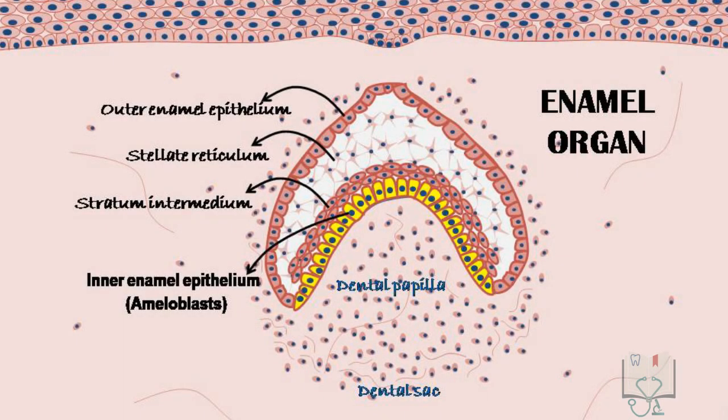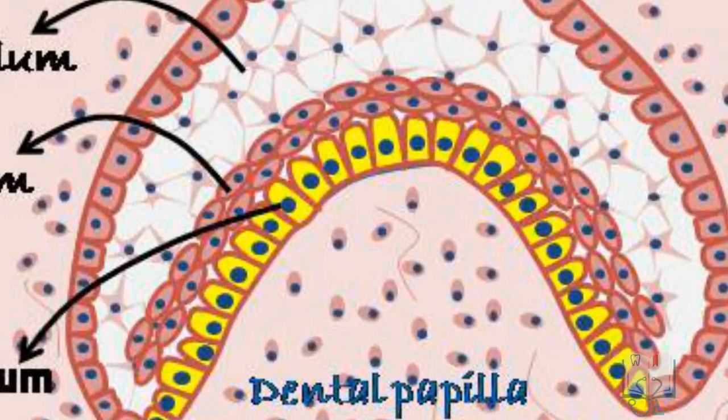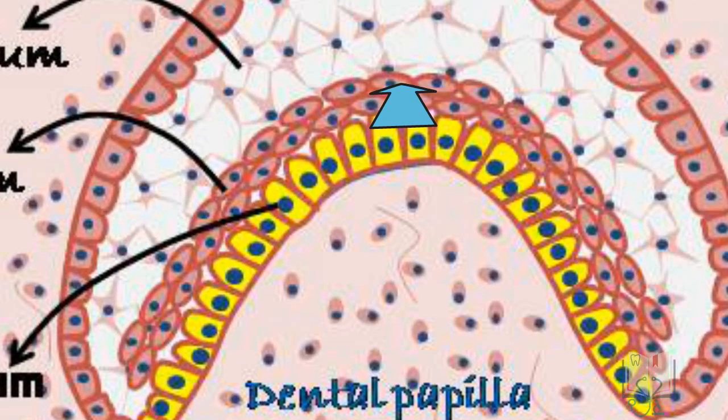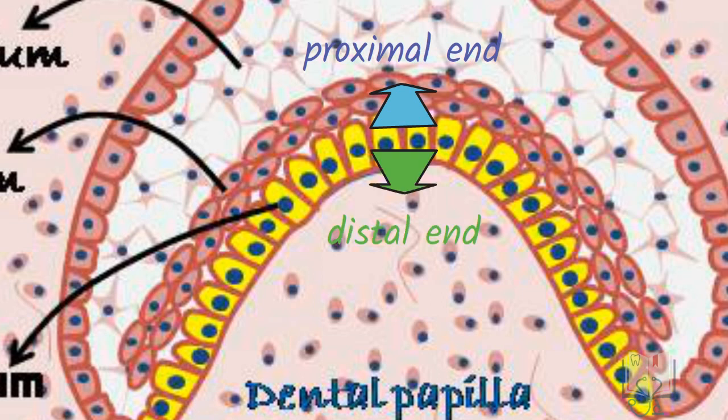For descriptive purposes, the side of the ameloblasts towards the stratum intermedium is the proximal end, and the side towards the dental papilla where enamel is formed is the distal end.